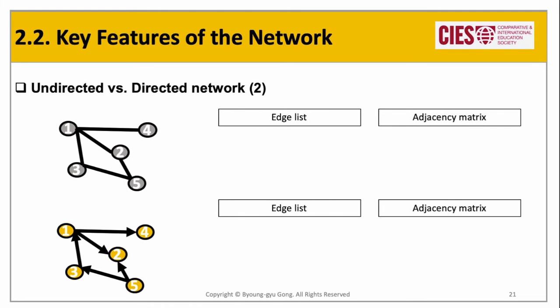Now let's see how undirected or directed networks are represented through edge lists and adjacency matrices. I recommend you practice writing the edge list and adjacency matrix for the given network graphs — the first is an undirected network and the second is a directed network. Just pause this video for a few minutes and try to write down the answers as you've learned, and I will show you the answers.